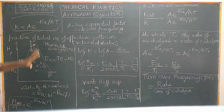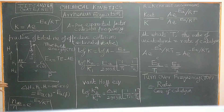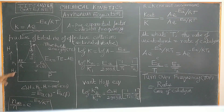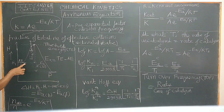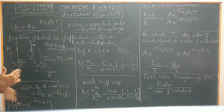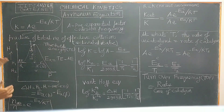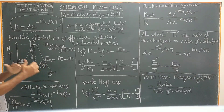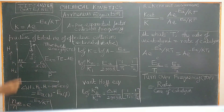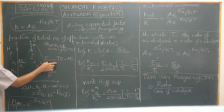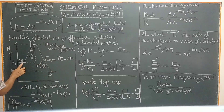What is the activation energy? Let us consider the reaction profile of an exothermic reaction, for example the Haber process — nitrogen plus hydrogen forming ammonia. This is the average energy of the reactant and the average energy of the product. In order for the reaction to take place, the reactant molecule has to cross the threshold energy. Molecules with energy equal to or above Ea will undergo reaction. Therefore, the activation energy equals the threshold energy minus the average energy of the reactant molecules.